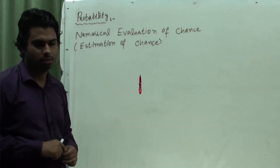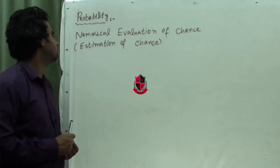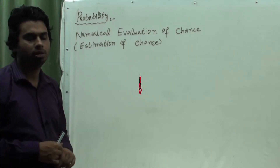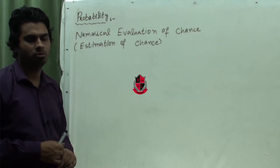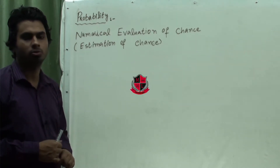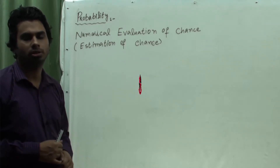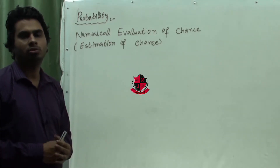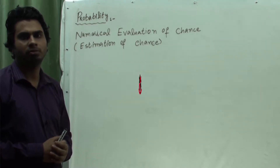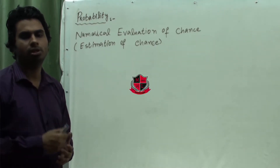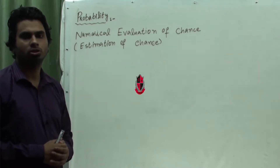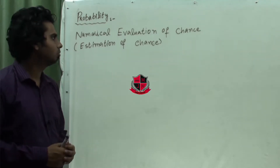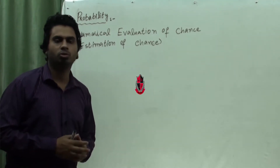In this series, our main objective will be probability. It's a very important topic. It also comes in Paper 1 as well as Paper 2 in all variants of O-level IGCSE exams. We will cover all the questions of Paper 1 and Paper 2. We will start from the basics of probability.